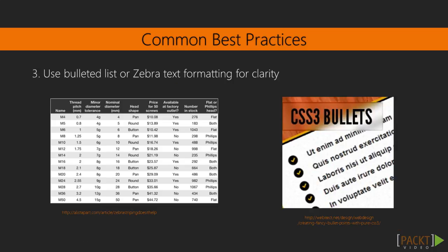Number three: when designing a list, use a bulleted or zebra text formatting for clarity. This helps you know what is listed, and it improves legibility.